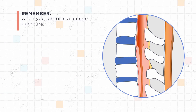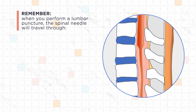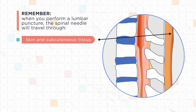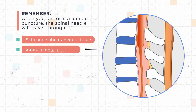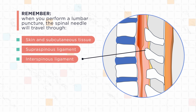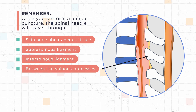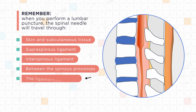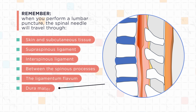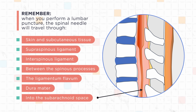Remember, when you perform a lumbar puncture, the spinal needle will travel through the skin and subcutaneous tissue, supraspinous ligament, interspinous ligament, between the spinous processes, through the ligamentum flavum, through the dura mater, and into the subarachnoid space.